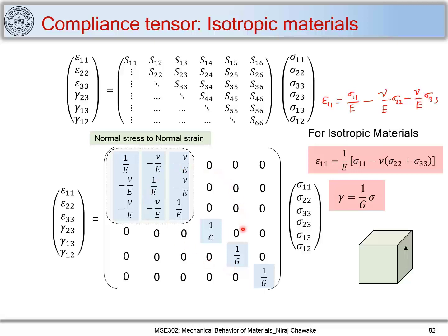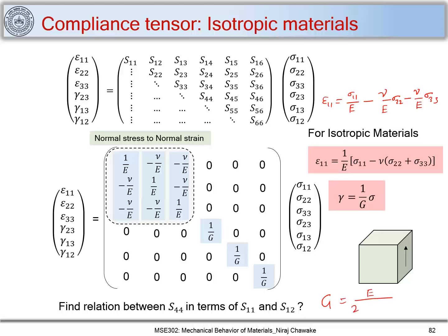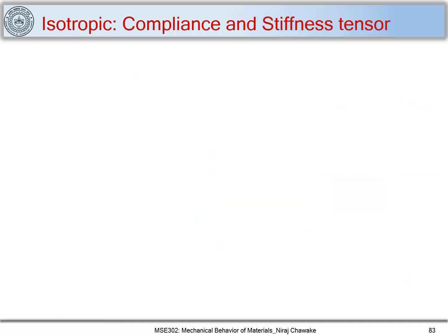What we have obtained is the compliance tensor relating strain components to stress components for isotropic cubic materials. I would like you to find the relation between S₄₄ in terms of S₁₁ and S₁₂. You can use the relation G = E / [2(1 + μ)] to find this. Here S₄₄ corresponds to 1/G, S₁₁ = 1/E, and S₁₂ = −μ/E.